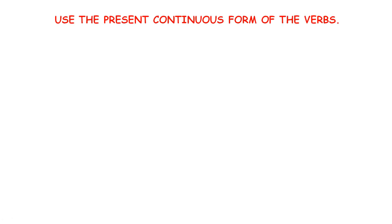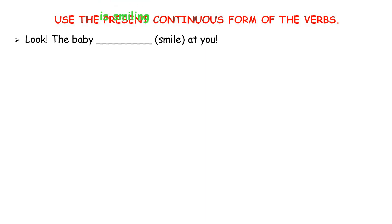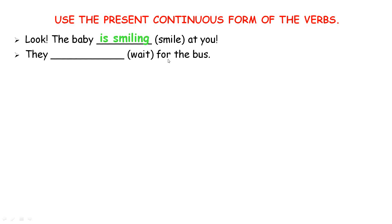Now use the present continuous form of the verbs. Let's see the first one: 'Look, the baby ___ at you.' We need to use 'is + verb-ing' with the baby. The baby is smiling at you. The second one: 'They ___ for the bus.' We use 'are + verb-ing' with they. They are waiting for the bus.